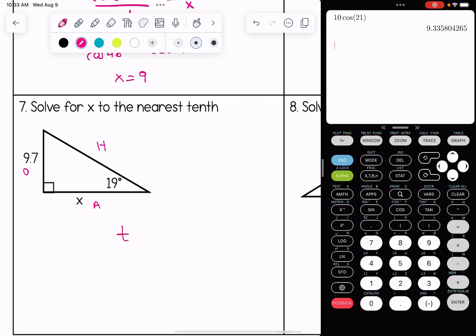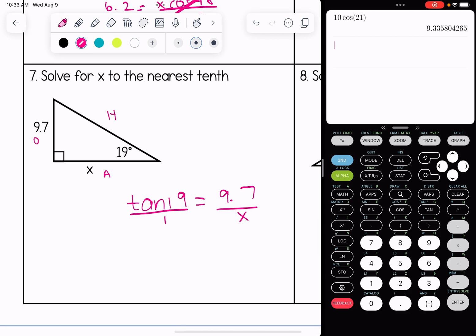We're going to put this over one, cross multiply, and then divide.